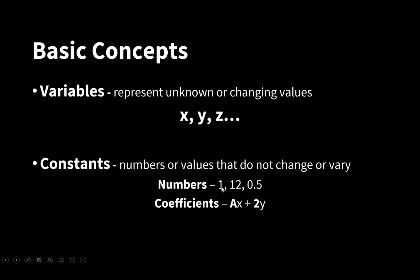For example, 1, 12, and half are numbers, but ax is a constant value which serves as the coefficient of the variable x.